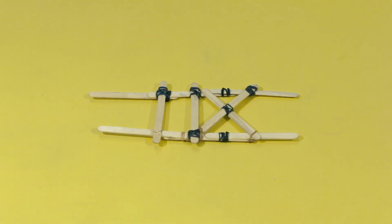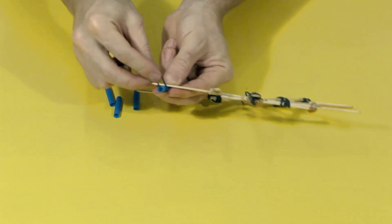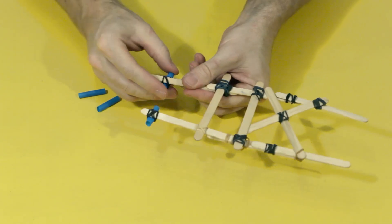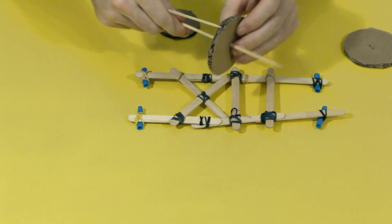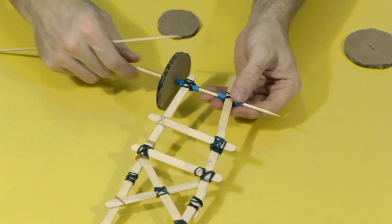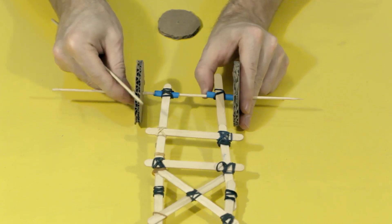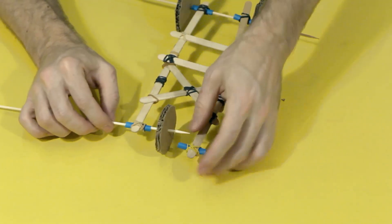Next, cut the straws into small pieces and use an elastic band to tie them to the ends of the popsicle sticks. Then it's just a matter of sticking the shish kebab skewer in a wheel, passing it through the straws, and sticking on the other wheel. Don't forget that the small wheel goes in the middle at the front.